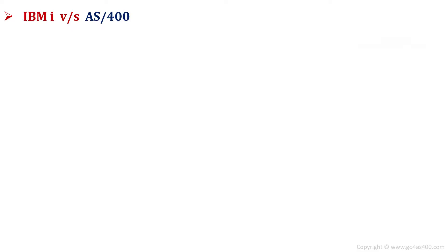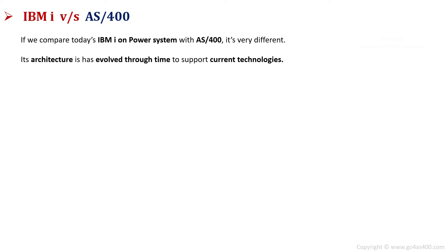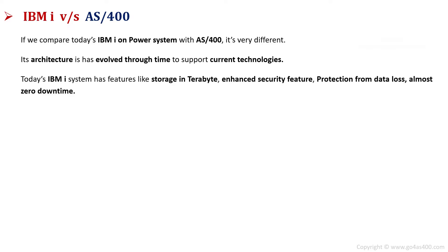Still many people call the system AS400 rather than IBM i. But if you compare today's IBM i system with AS400, it's very different. Its architecture has evolved through the time to support current technologies. Today's IBM i system has features like storage in terabytes, enhanced security features, protection from data loss, and almost zero downtime.